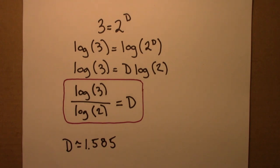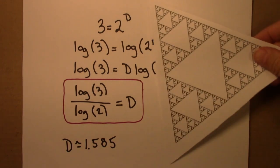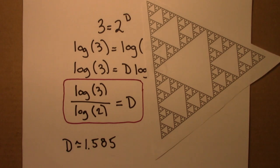The dimension of the Sierpinski triangle is between one and two. So this object has a dimension of about one point five eight five.